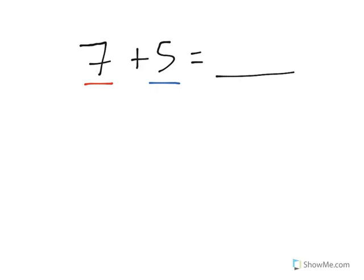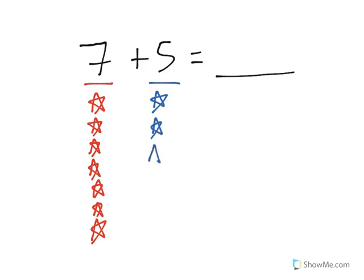I'm going to represent this by using stars. We start with 7 stars. 1, 2, 3, 4, 5, 6, 7. And then we add in 5 more stars. 1, 2, 3, 4, 5.